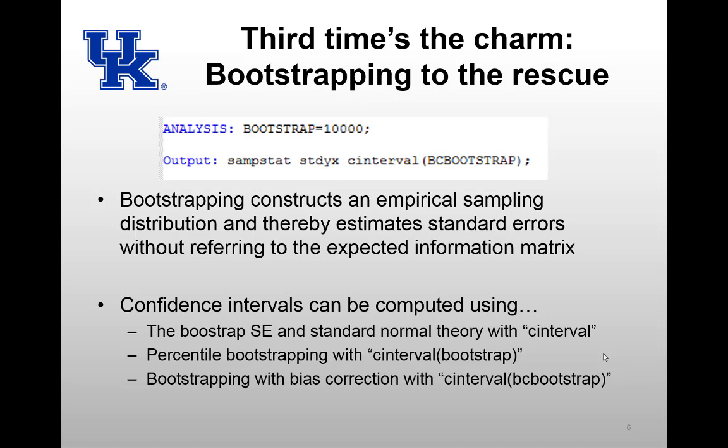And we can do that using bootstrapping. Instead of using a theoretical computation for our sampling distribution to create the standard errors, we can bootstrap, which creates an empirical sampling distribution based on resampling from our data. And this allows for standard errors to be directly estimated from that empirical sampling distribution, and we don't have to refer to the expected information matrix, so that non-positive definiteness is not an issue for us here.